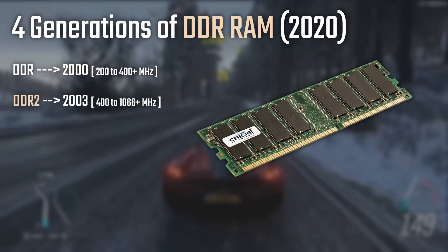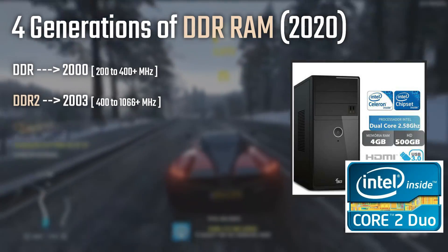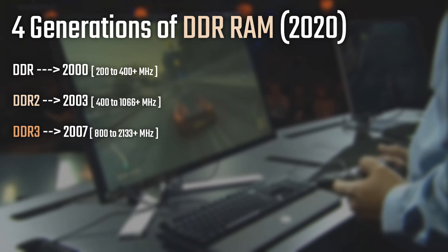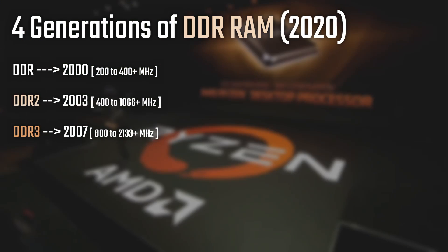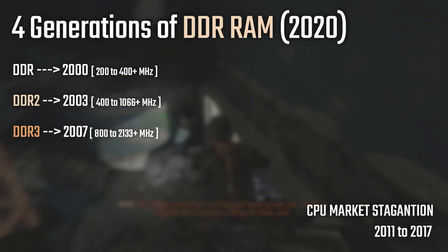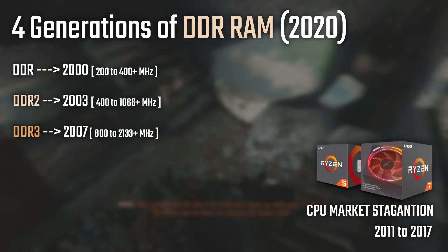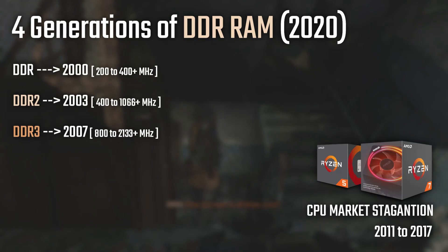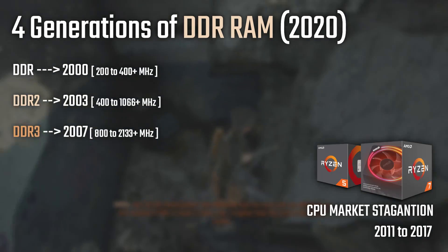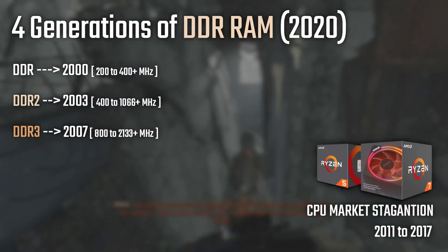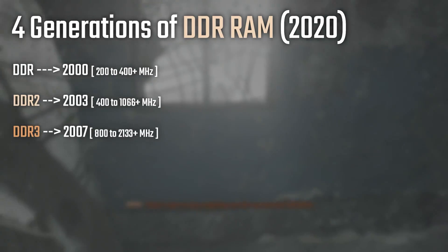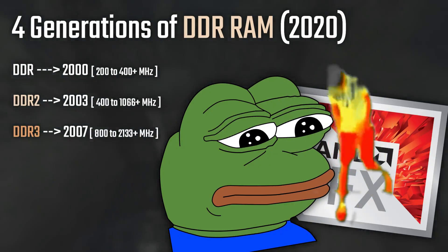DDR2 was released back in 2003, being used in Intel Dual Cores, Core 2 Duos, some Core 2 Quads, and some AMD Athlons and Semprons. DDR3 was released in 2007, and many people are still using it in 2020. This happens mostly due to the CPU market stagnation we had from 2011 to 2017, when Ryzen CPUs were launched. People with 3rd and 4th gen Intel CPUs weren't in need of upgrading to the 6th or 7th, since it wasn't worth buying a new CPU, motherboard, and RAM kit just to end up with another quad-core CPU.